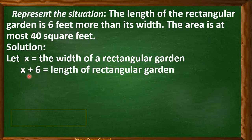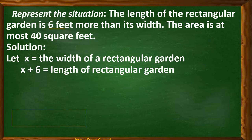Why do we have x + 6? Based on the problem, the length of the rectangular garden is 6 feet more than its width. So if x is the width, then the length is x plus 6 — that is why we have x + 6 because of the statement '6 feet more than its width.'